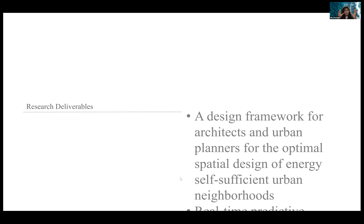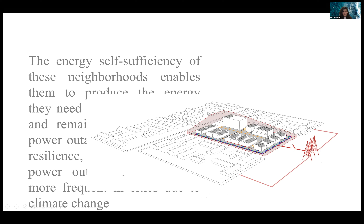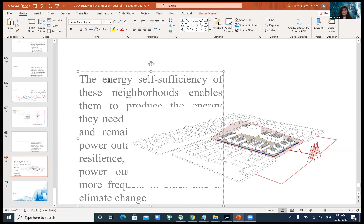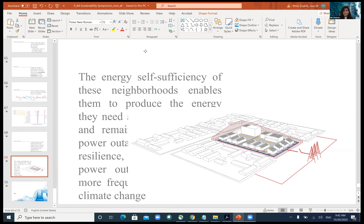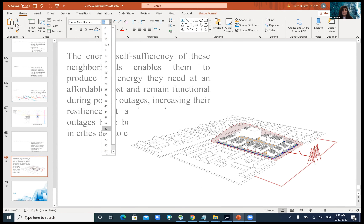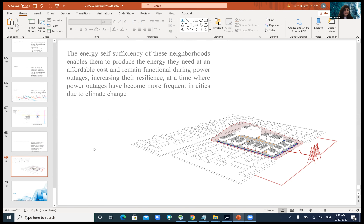I used the learned surrogate models at the back end of a software prototype I developed, so that architects and urban planners can design their neighborhood and see the energy performance values in real time, following the urban planning principles I extracted for San Diego. The tool enables architects and urban planners to design energy-independent, energy self-sufficient communities with local power systems such as community microgrids — spatially designing them so they can produce the energy they need at affordable cost and remain functional during power outages, increasing their resilience as power outages become more frequent due to climate change.